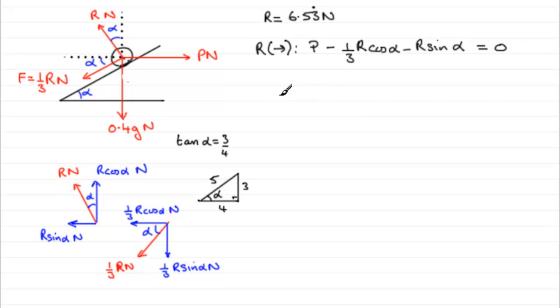Now all we need to do now is just simplify this. So we've got P minus one third R cos alpha. That would be one third. The cosine of alpha is four fifths adjacent over hypotenuse, so mark that in as four fifths. And then we've got the R minus R sin alpha. Sine of alpha is opposite over hypotenuse, three fifths, so you've got minus three fifths of R. And that equals zero.